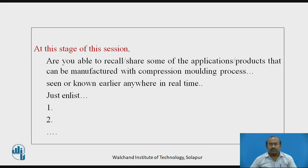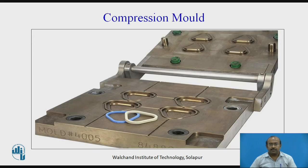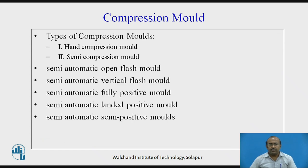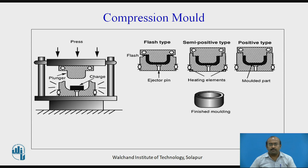Just enlist the varieties of products. This is the compression mold and how it looks, with the produced part placed on it. Types of compression molds include hand compression molds and semi-automatic varieties: open flash, vertical, fully positive, landed positive, and semi-positive — that is, flash type, semi-positive type, and positive type. We are going to see each in detail one by one.